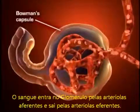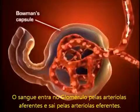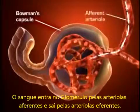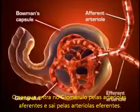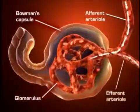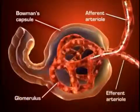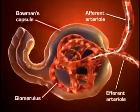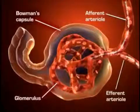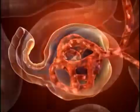Blood flows into the glomeruli through the afferent arterioles, and flows out of the glomerulus through the efferent arteriole. The afferent and efferent arterioles regulate glomerular capillary pressure by selectively dilating or constricting.